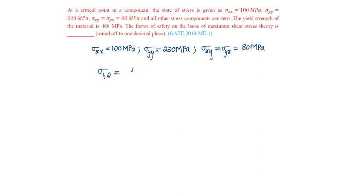is given by sigma xx plus sigma yy by 2 plus or minus under root of sigma xx minus sigma yy by 2 whole square plus tau xy square.